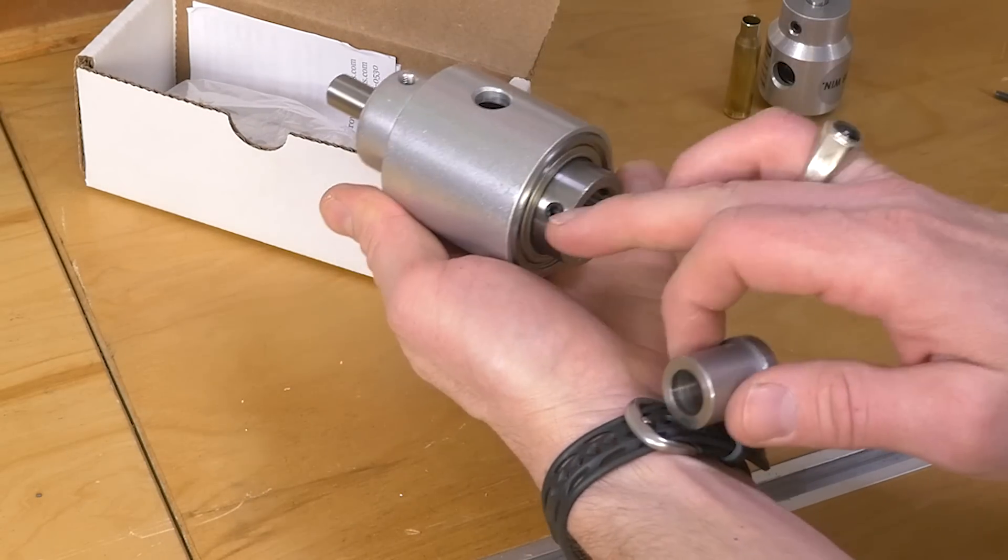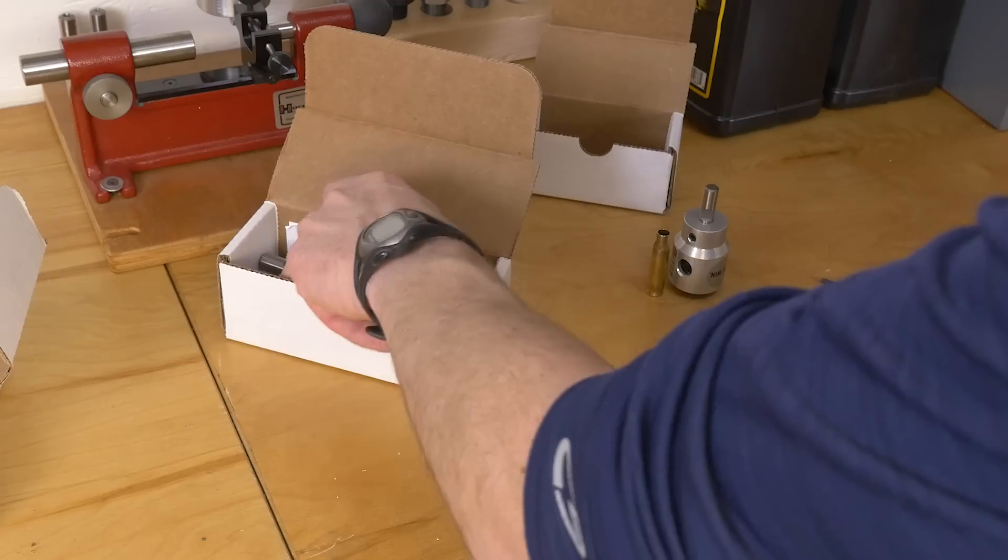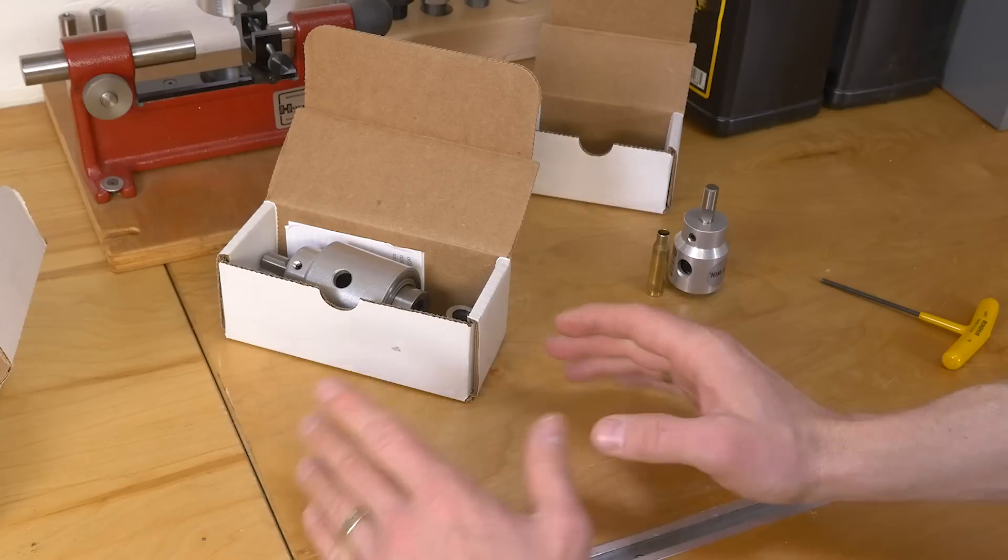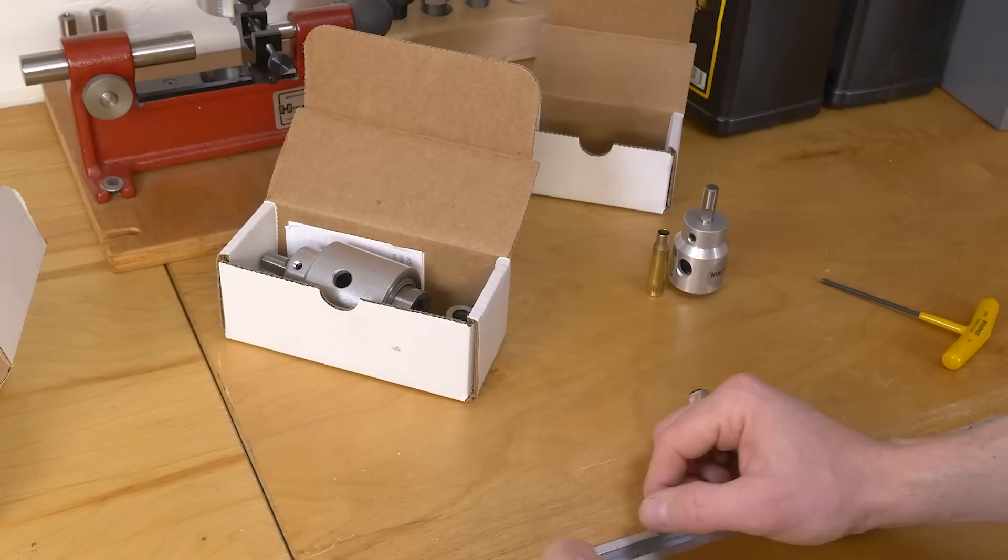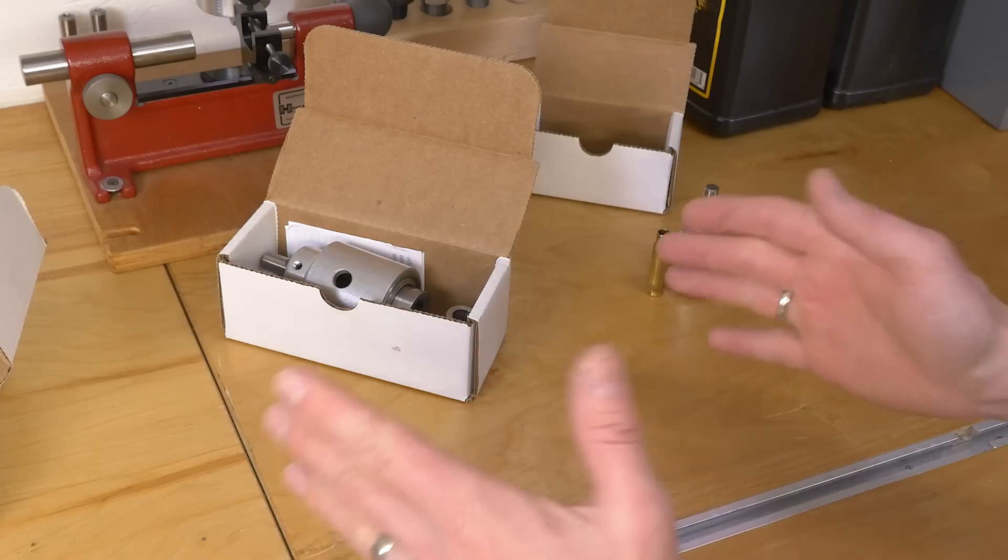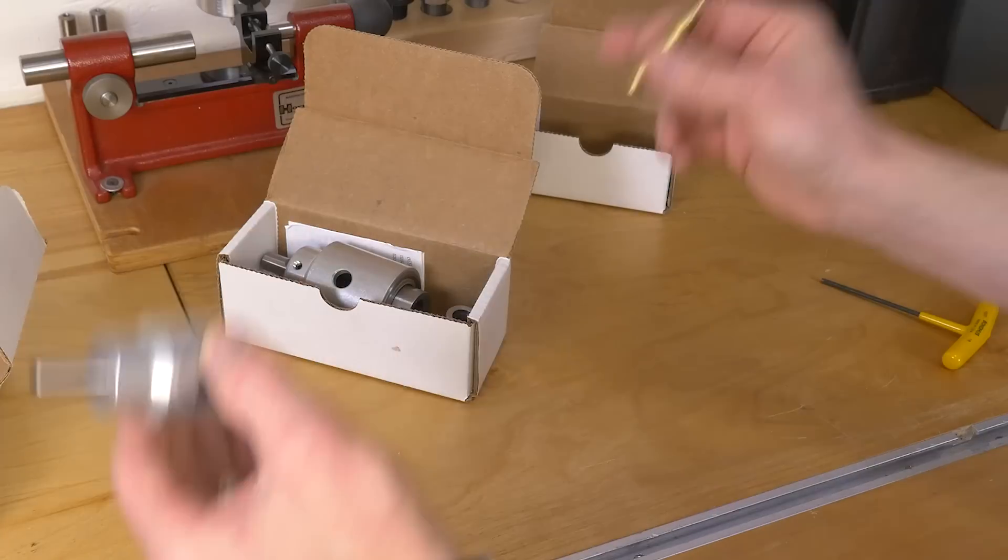So we can install the insert with these set screws here. We can swap it out. If I had another large chambering brass I wanted to trim and that way I can make the investment one time in the trimming body itself. Swap out inserts that kind of a thing. So it's a great tool. Great design. Let's see it in action.